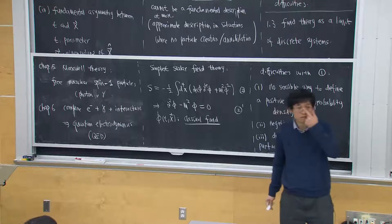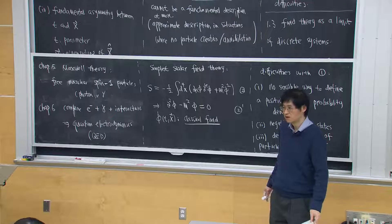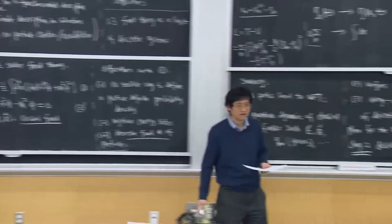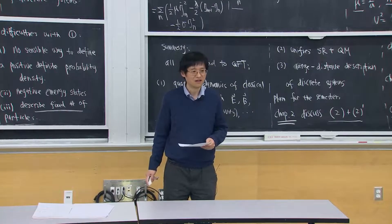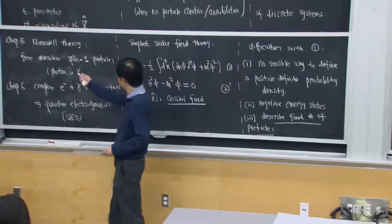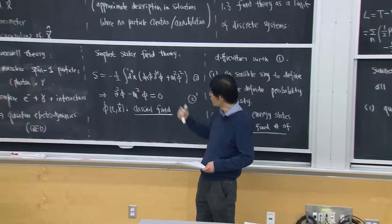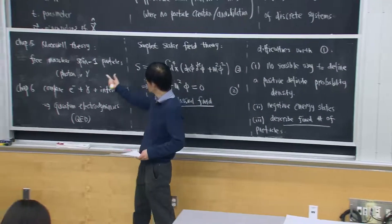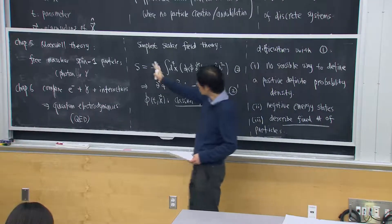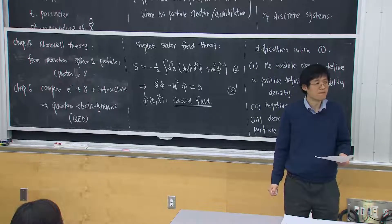A student asks whether the chapters correspond to chapters in the textbook or lecture notes — the answer is the lecture notes. Another student asks about gluons: gluons are also massless spin-1, but they interact with themselves, unlike photons, so gluons require quantum field theory 2. Essentially this course covers everything except gluons.